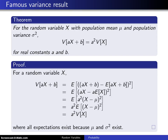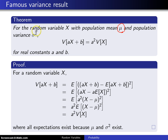Here is another well-known result concerning the population variance. For the random variable x — and x could be discrete or continuous — with population mean mu and population variance sigma squared. When stated in this fashion, it is assumed that the population mean mu and the population variance sigma squared both exist.